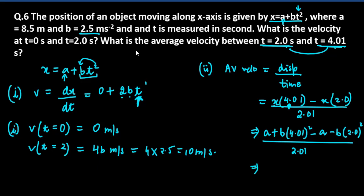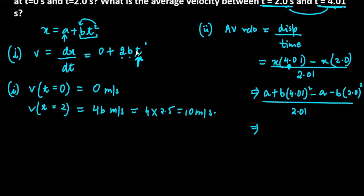The a values cancel because one is positive and one is negative. Taking b common, we get b times 4.01 square minus 2.0 square, divided by 2.01.